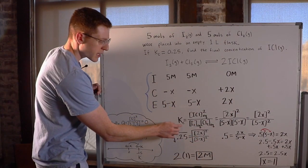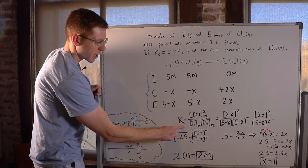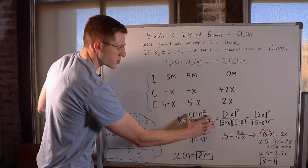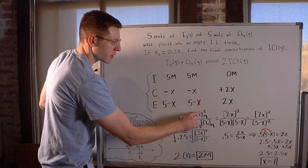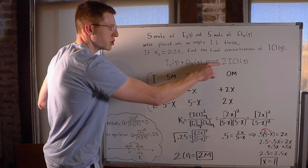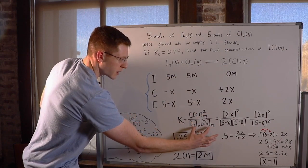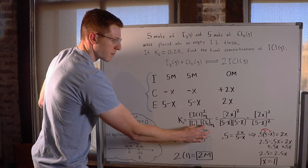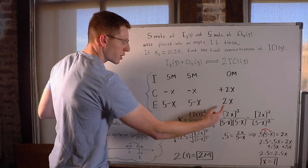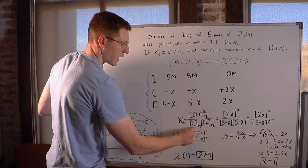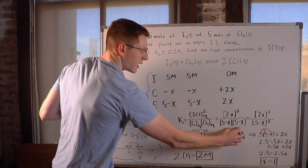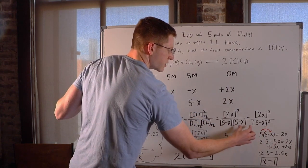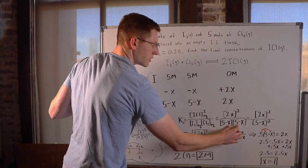Next, I wrote out the equilibrium expression. Kc equals the product concentration squared — because the stoichiometric coefficient is 2 — over the equilibrium concentrations of the reactants multiplied together. Plugging in the equilibrium row values for I₂, Cl₂, and ICl, the denominator simplifies to (5 minus X) squared, since it's (5 minus X) times (5 minus X).